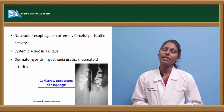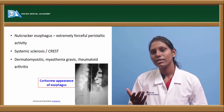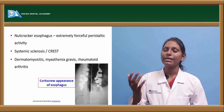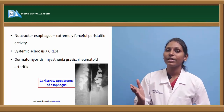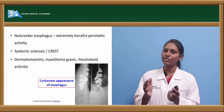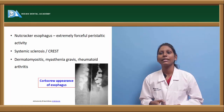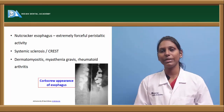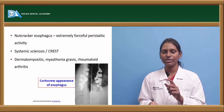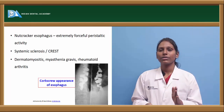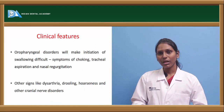Nutcracker esophagus is a condition that causes extremely forceful peristaltic activity, also leading to dysphagia. In systemic sclerosis and CREST syndrome — which includes calcinosis cutis, Raynaud's phenomenon, esophageal dysmotility, scleroderma, and telangiectasia — esophageal strictures are one of the components. Dermatomyositis, myasthenia gravis, and rheumatoid arthritis are autoimmune disorders that may also exhibit dysphagia. The corkscrew appearance of the esophagus, resembling a corkscrew, is one such cause of dysphagia.